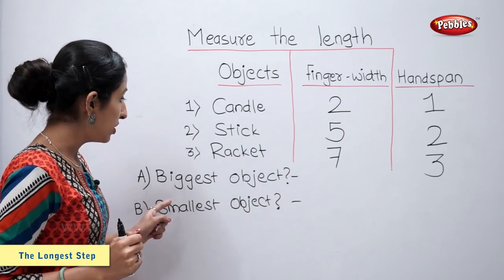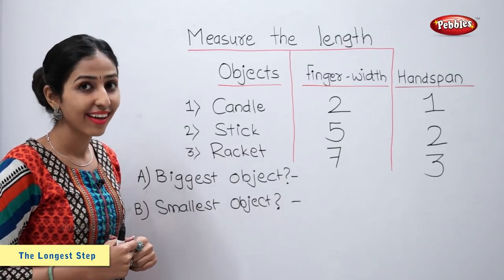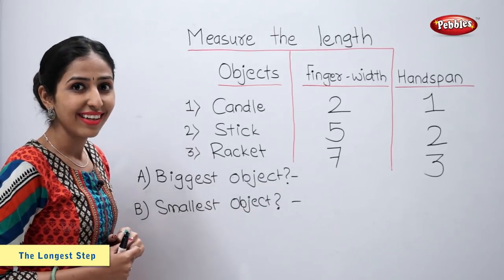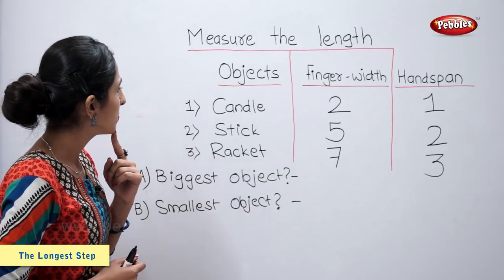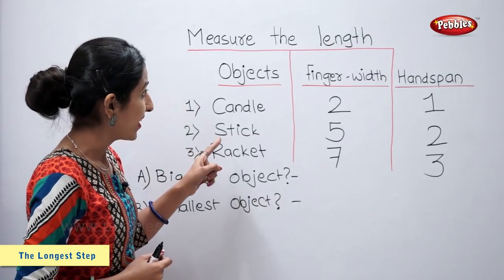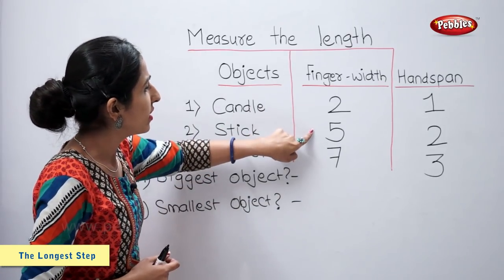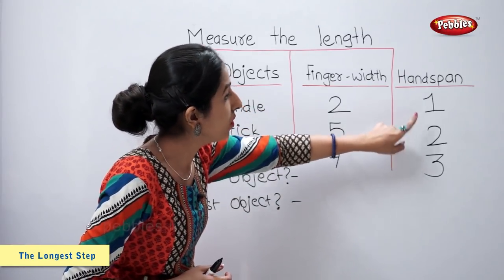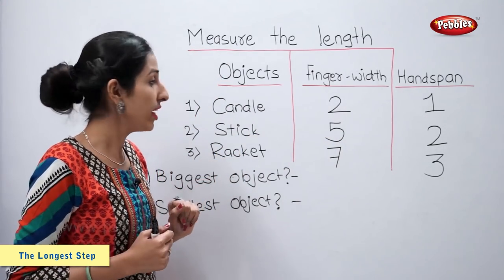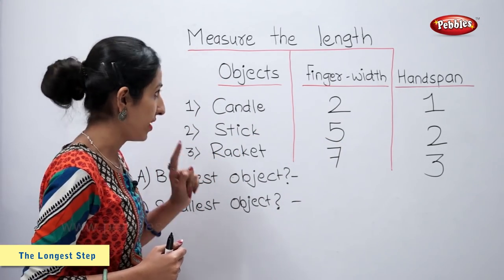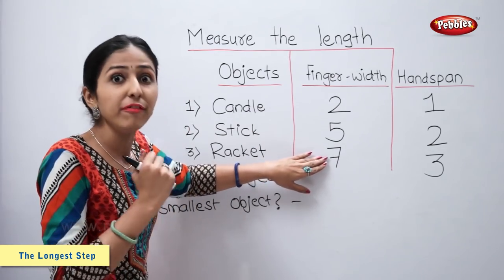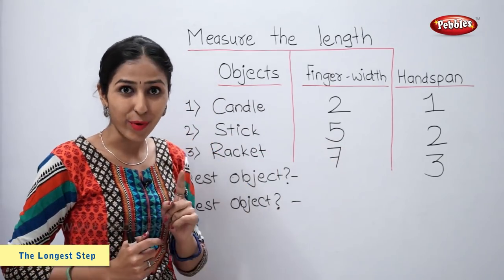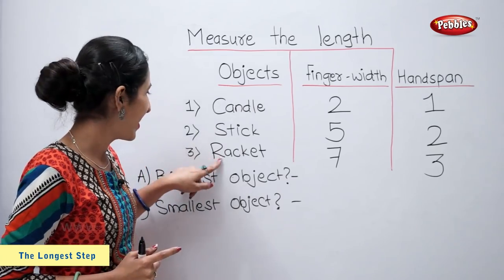Now students, you tell me which is the biggest object. Look at this chart and tell me. Stick is five finger width, two handspan. Let us see for racket — racket is seven finger width and three handspan. So the biggest object is racket.